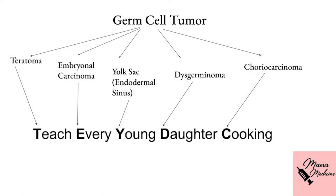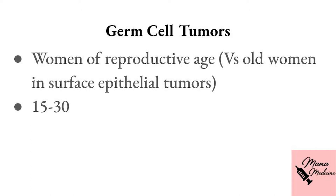The general characteristic of germ cell tumors is that they present mainly in women of reproductive age, approximately 15 to 30 years old. This is the biggest high-yield point. If the woman is very old, we associate it with surface epithelial tumors. But if she is young — 25 or 30 — or even a child under three years old, we consider germ cell tumors.